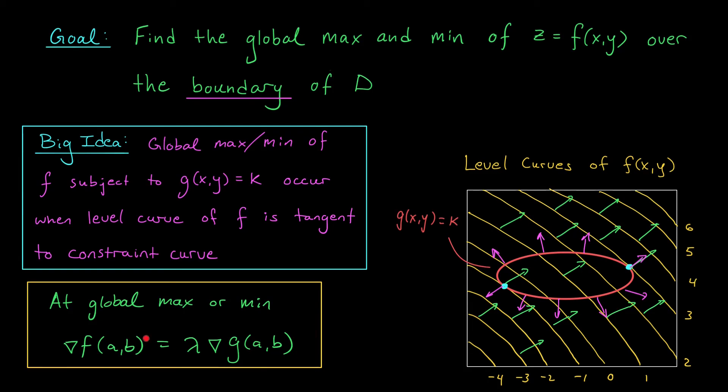And if that's the case, then you're never going to be able to satisfy this equation. So we're going to have to check the points where the gradient of g is zero separately, but that's not usually a big deal.